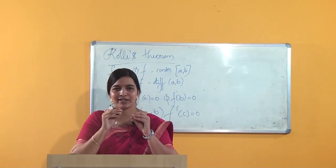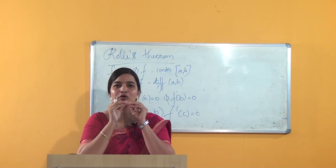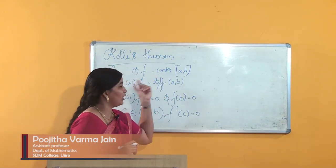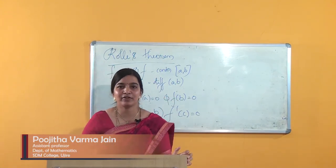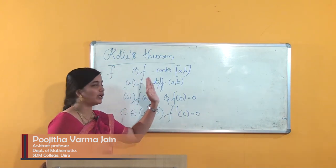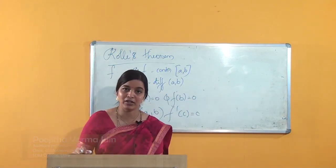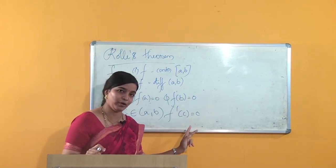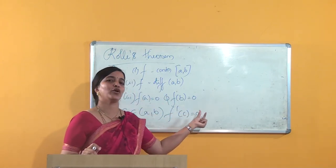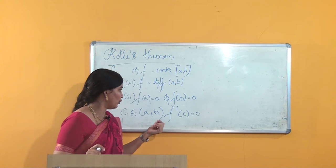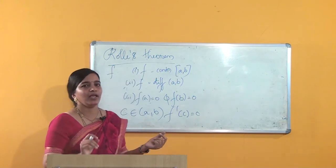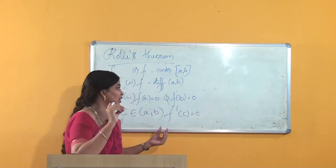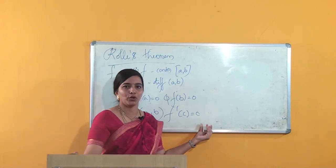Hello students. We were discussing Rolle's theorem. The theorem states that if a function f is continuous on the closed interval [a, b], differentiable on the open interval (a, b), and f(a) = 0 and f(b) = 0, then we can find a point c belonging to (a, b) such that f'(c) = 0.